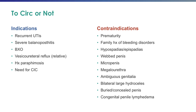Contraindications to neonatal circumcision or circumcision in general include prematurity for a neonatal circumcision, a family history of bleeding disorders in an infant that has not been tested, presence of hypospadias or epispadias, significant penile-scrotal webbing, a micropenis, a megalourethra, ambiguous genitalia where the sex of the child has not been confirmed, bilateral large hydrocele, a buried or concealed penis, and congenital penile lymphedema.